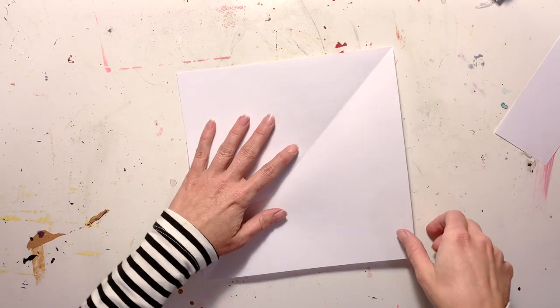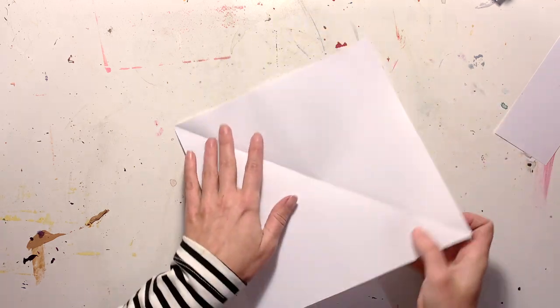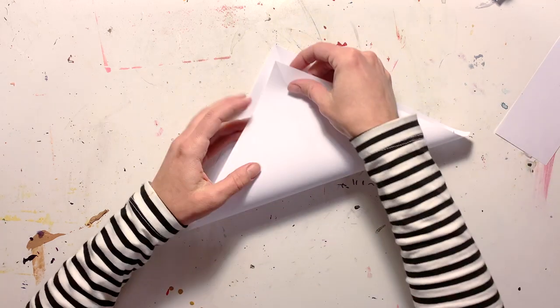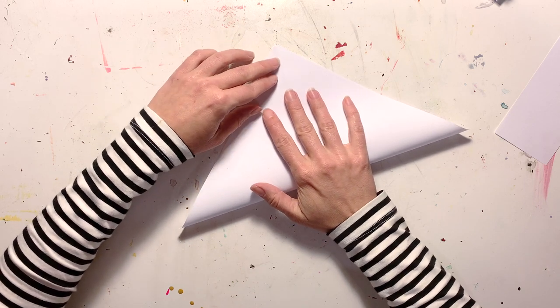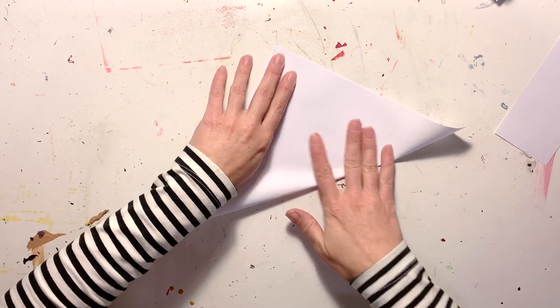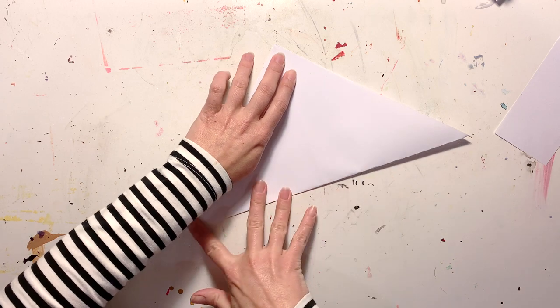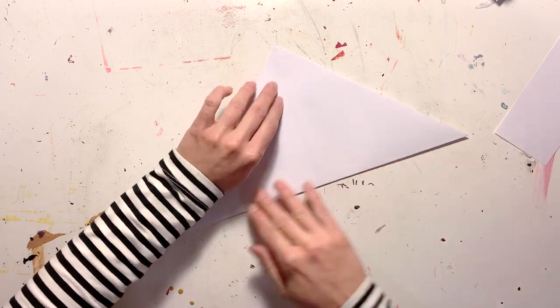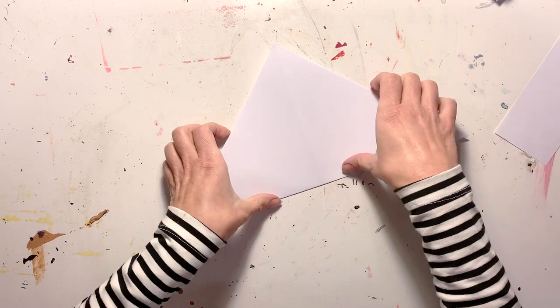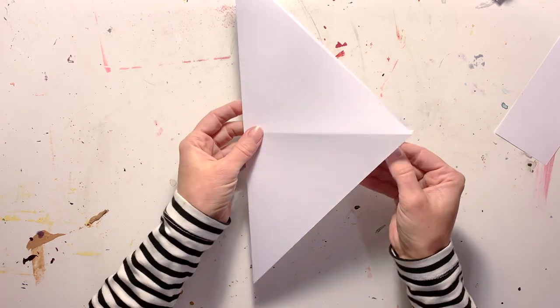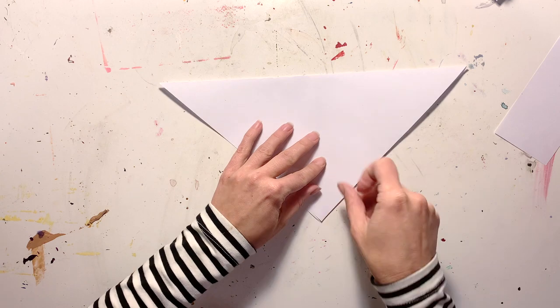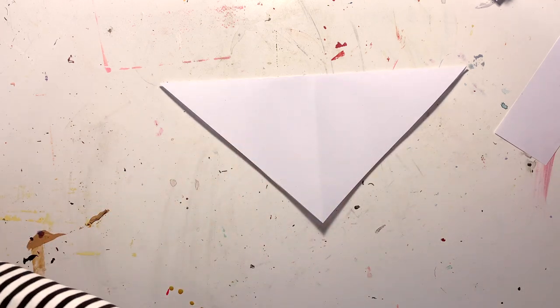So from here, I'm going to grab the other corner and fold the paper across in the direction that it hasn't already been folded. So then that way I'm going to have two diagonal folds going across the square sheet of paper. See? Now I'm going to keep it folded that way.